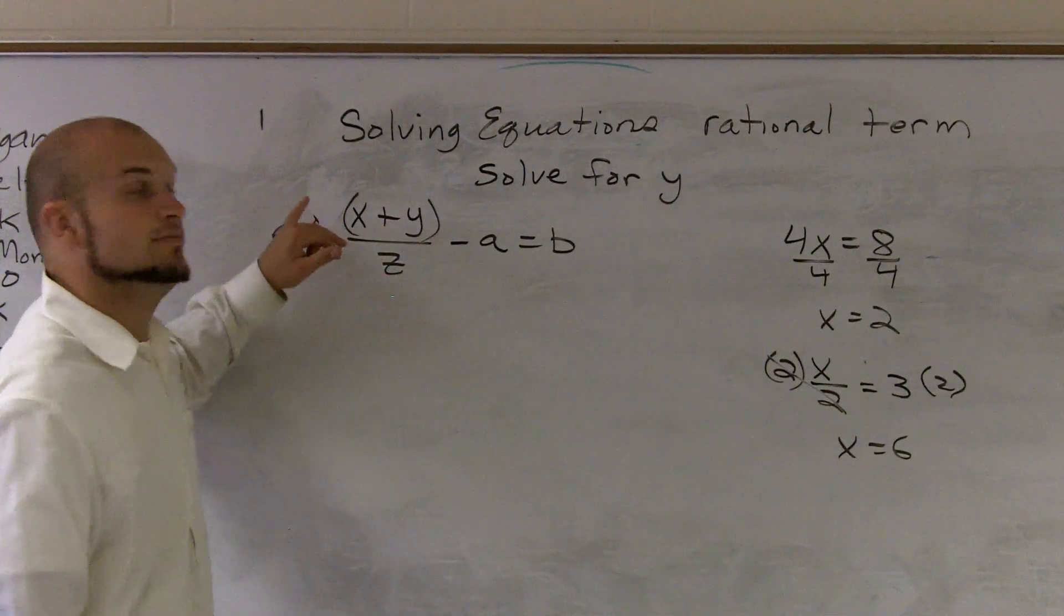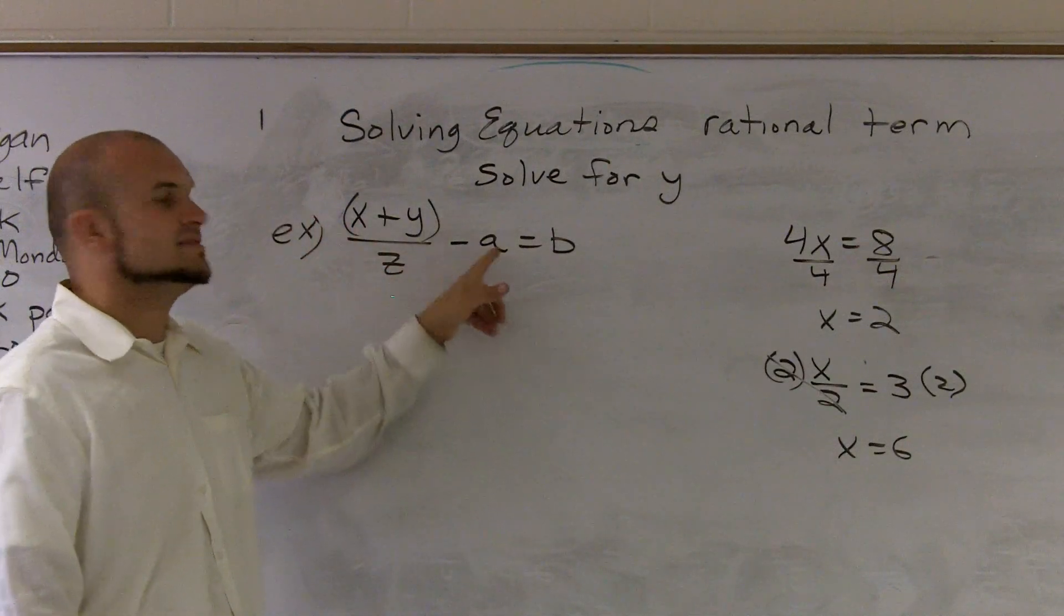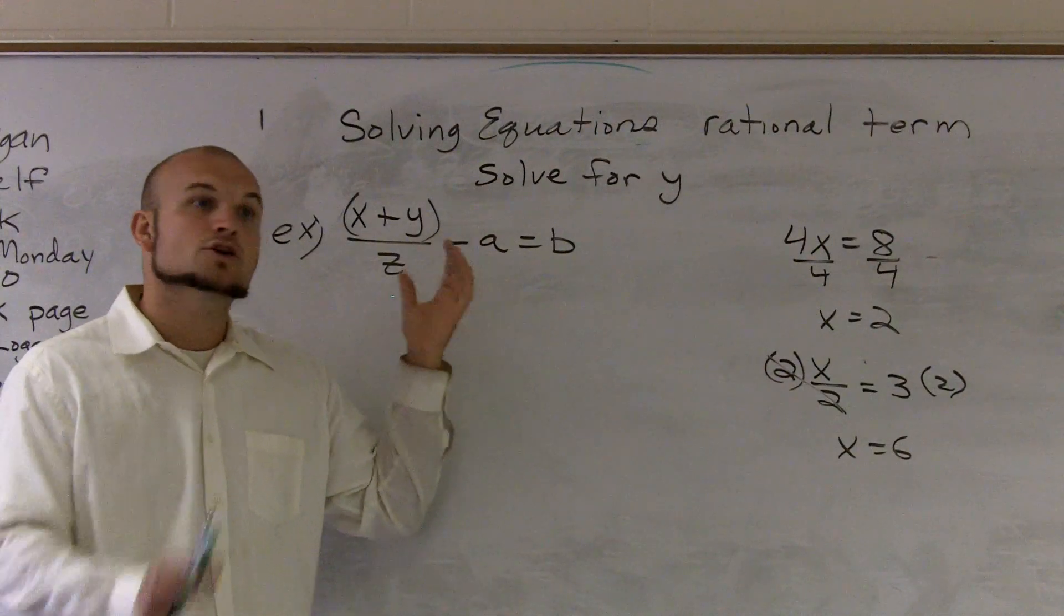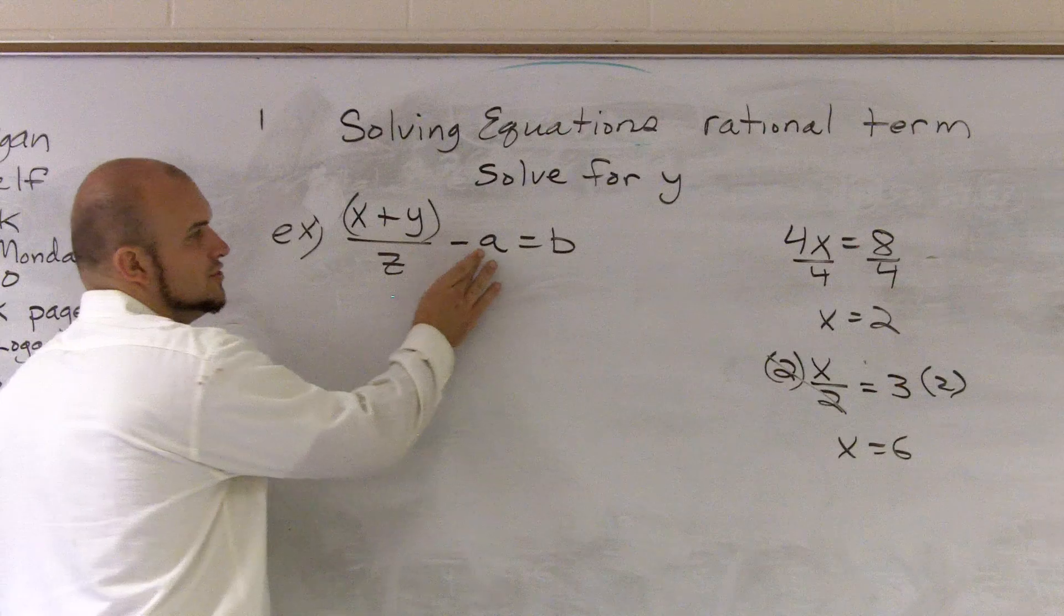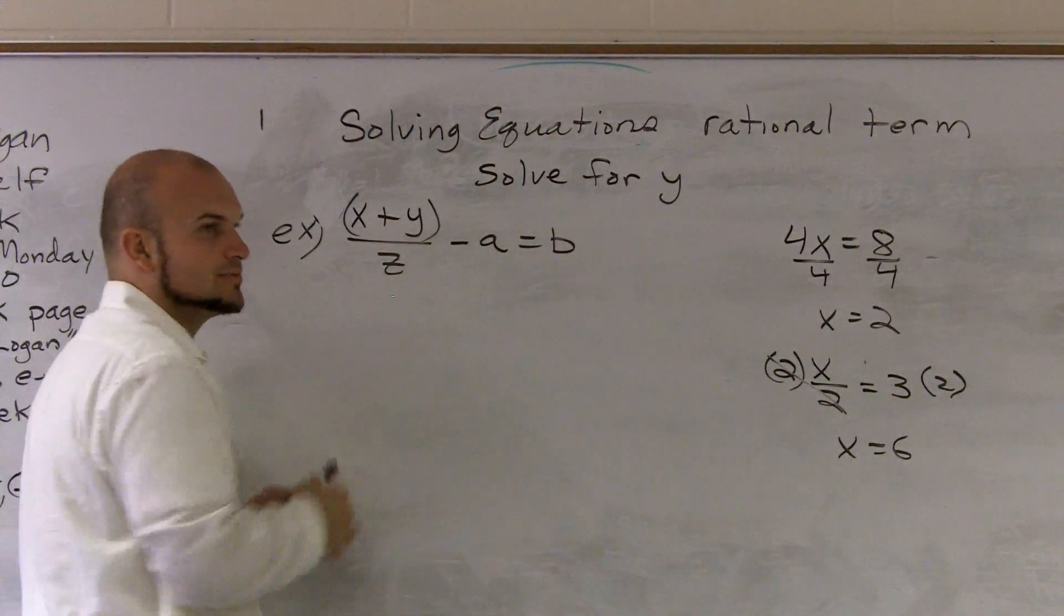Now, I could just multiply by z right here, but I have to notice, if I'm going to multiply by z, I also have to multiply the z times the negative a, because those are two different terms on the same side of the equation. You can do it that way if you'd like to. However, I prefer to add the a to the other side and then multiply by z.